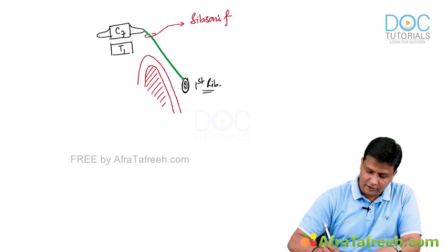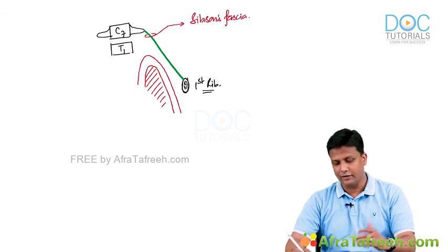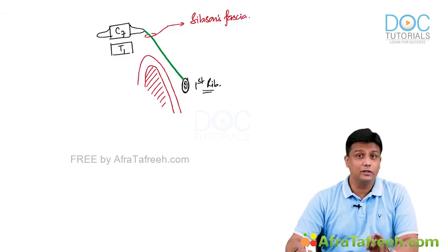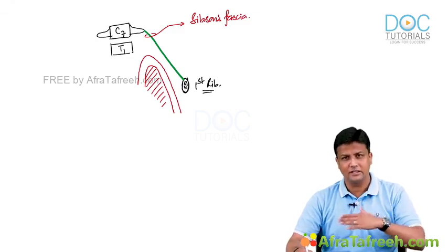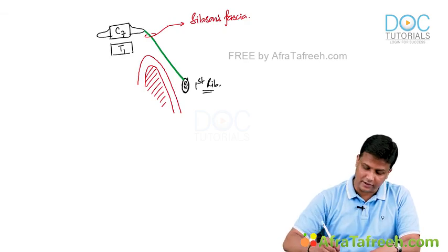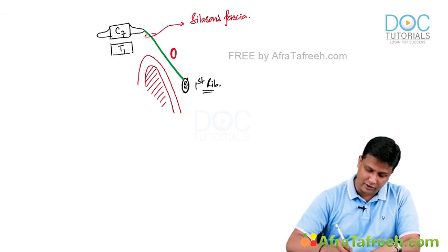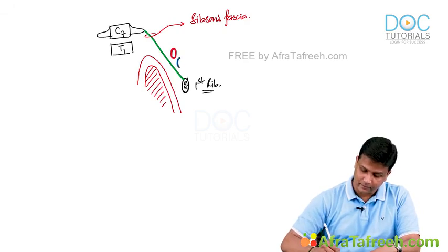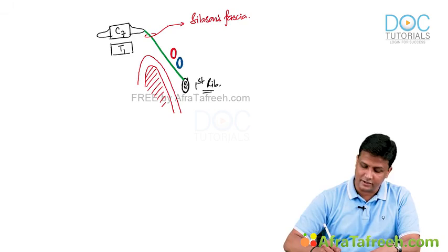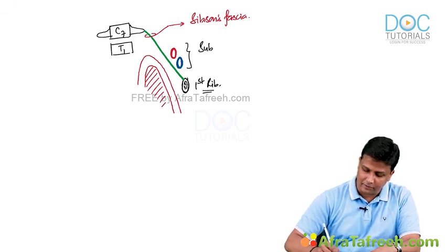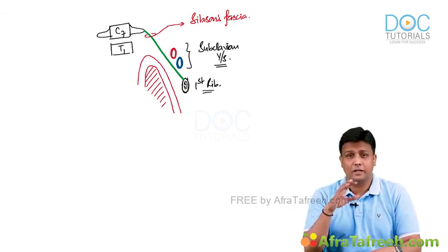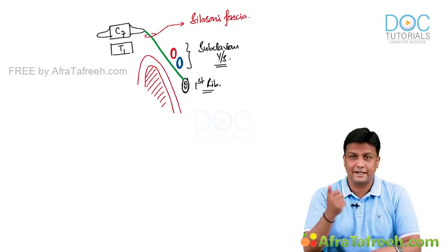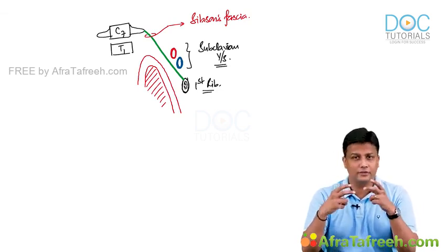An additional important point: you need to remember the position of the subclavian vessels relative to Sibson's fascia. Both the subclavian artery and the subclavian vein are present above Sibson's fascia. This is an important exam point in relation to the thoracic inlet.